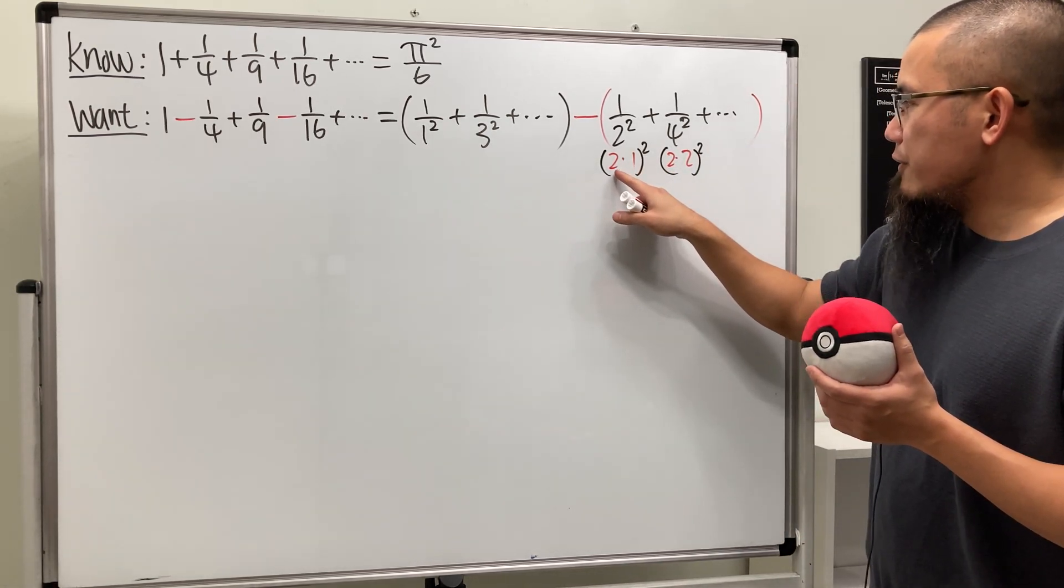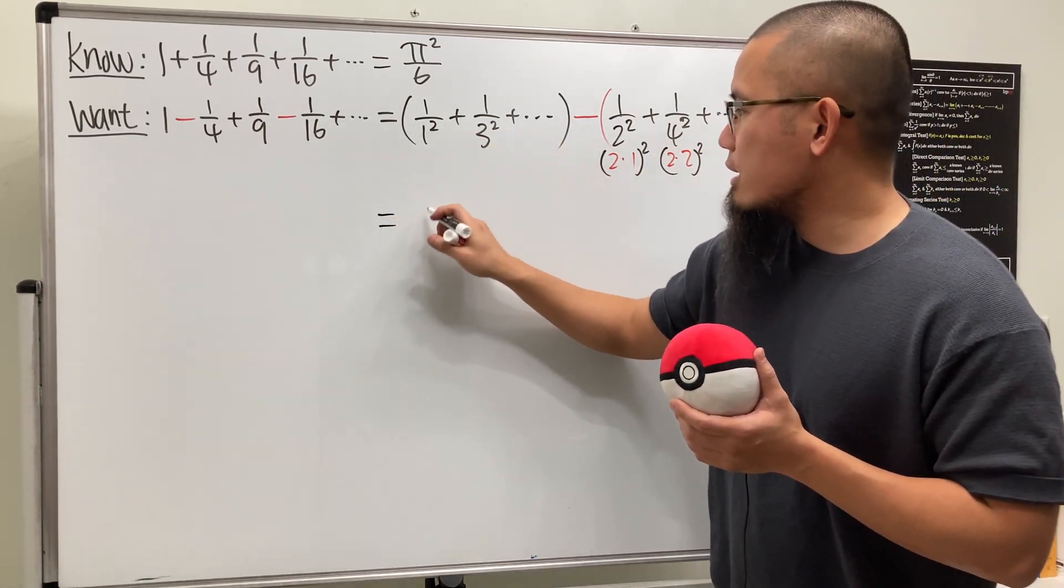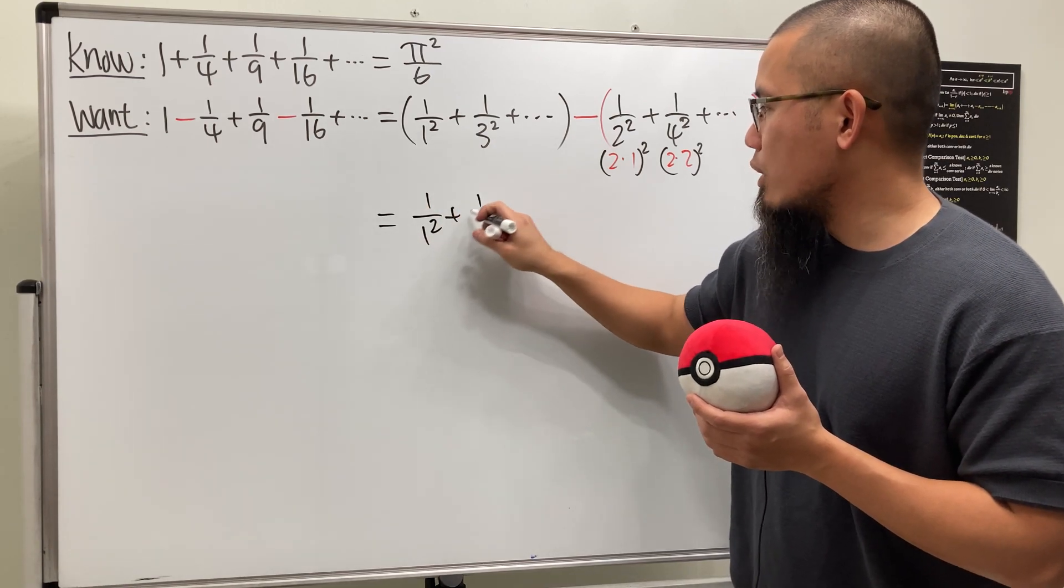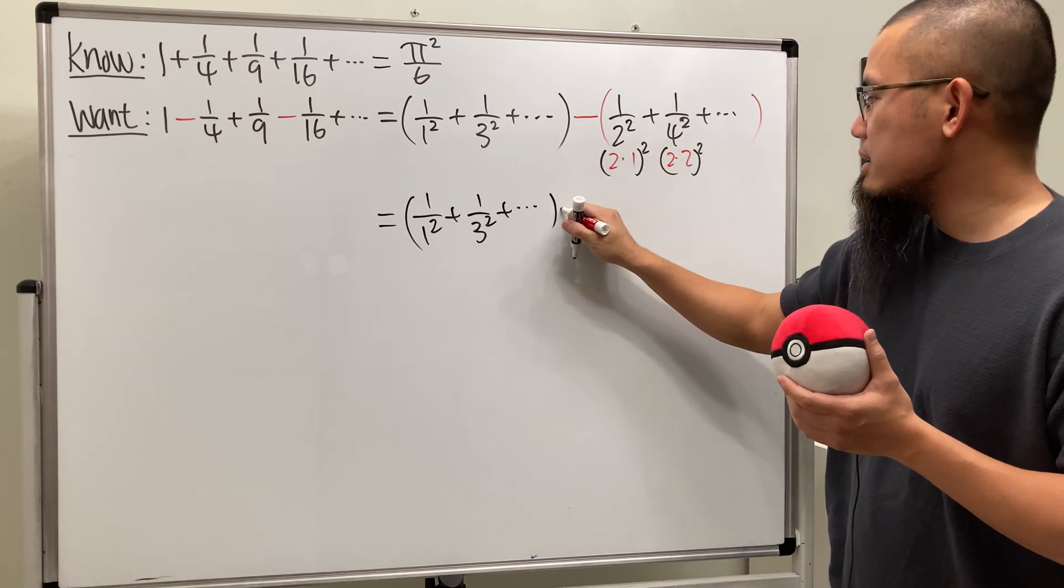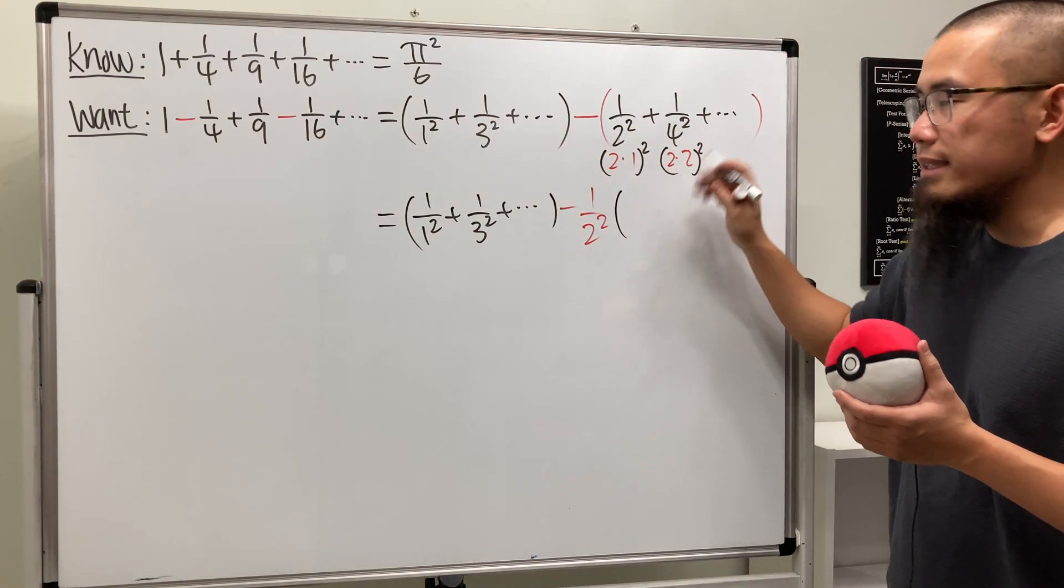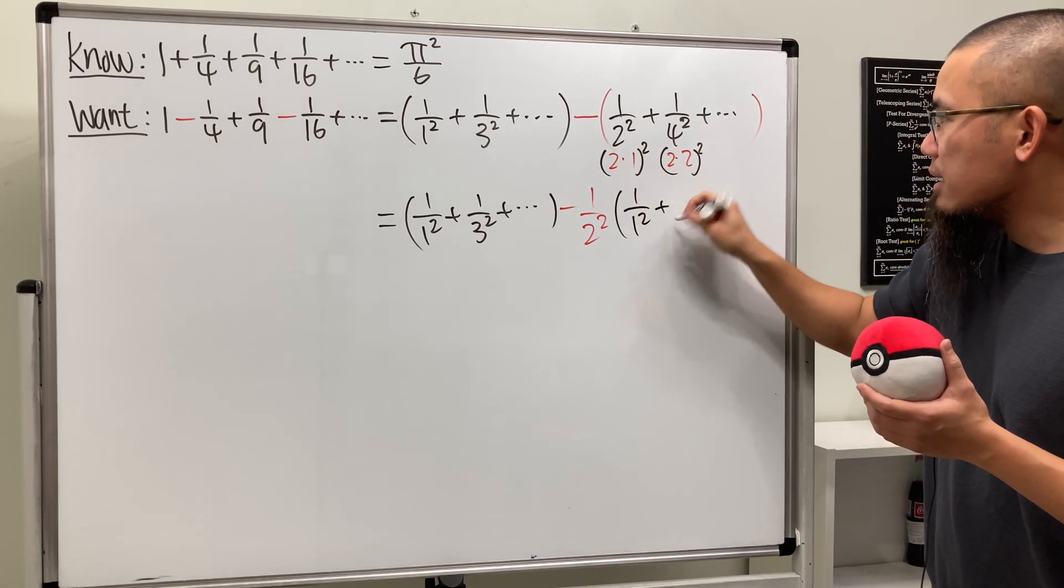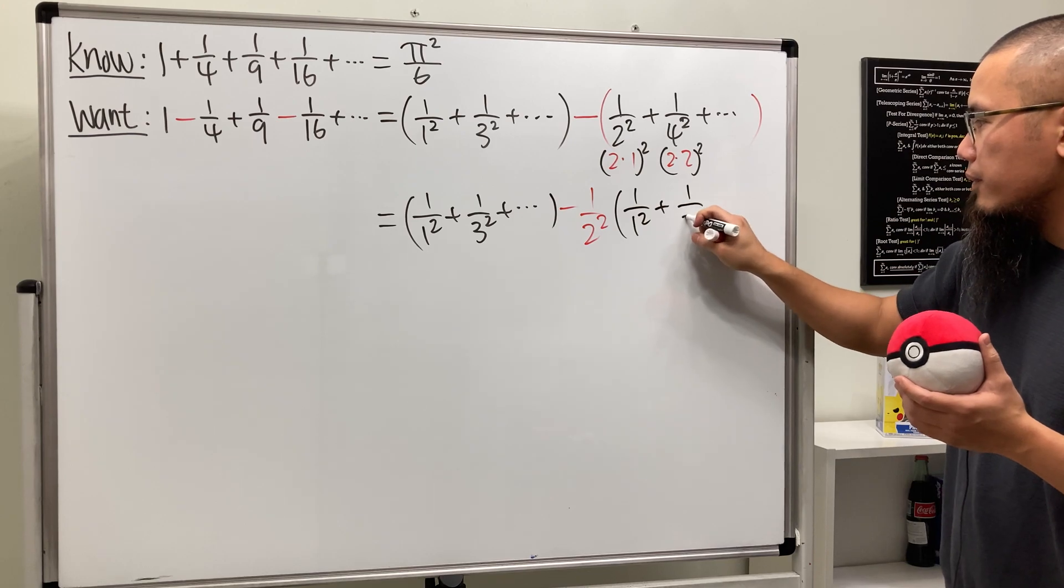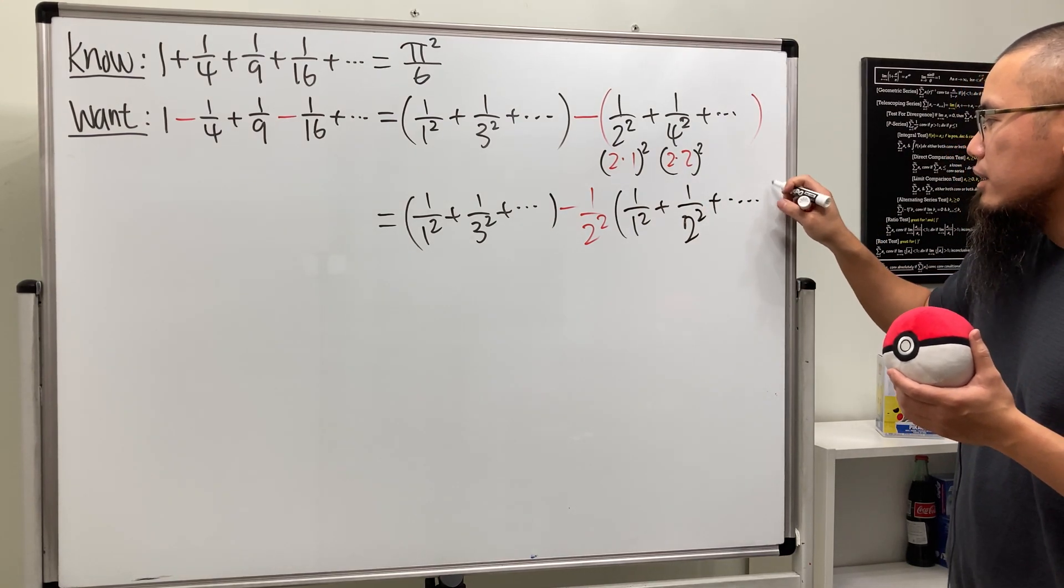So we can actually factor out 2 squared on the bottom for all these terms. So we are going to get 1 over 1 squared plus 1 over 3 squared plus dot dot dot minus 1 over 2 squared, and then for the rest, we will just have 1 over 1 squared plus 1 over 2 squared, and then plus 1 over 3 squared, and so on.